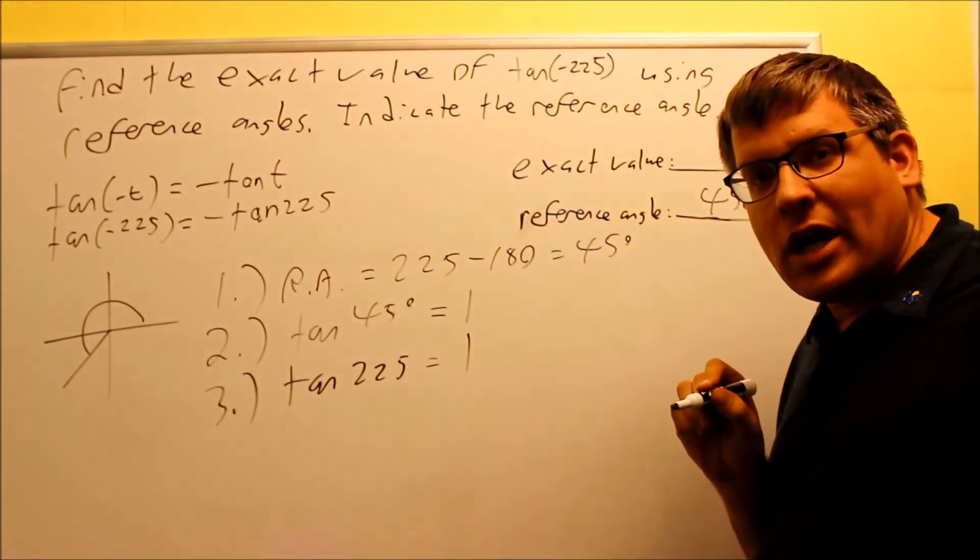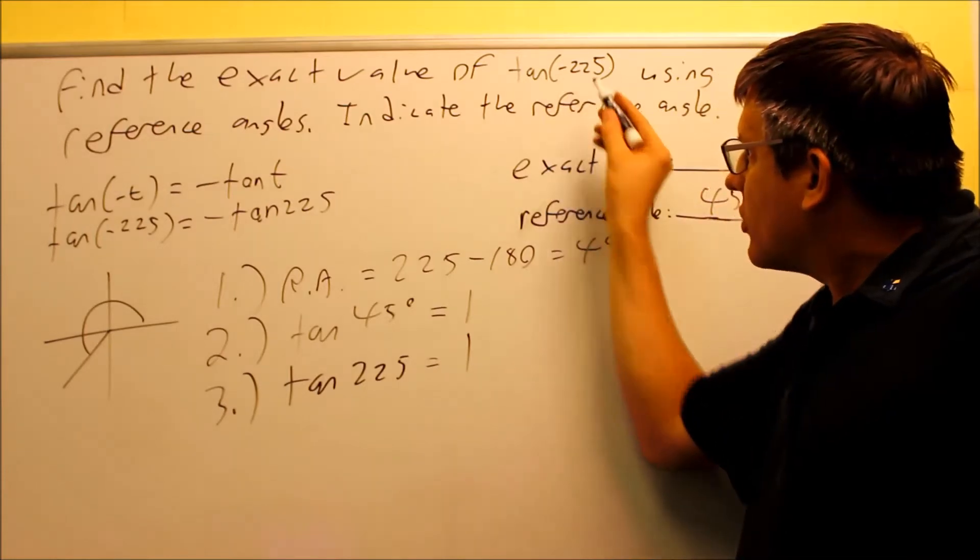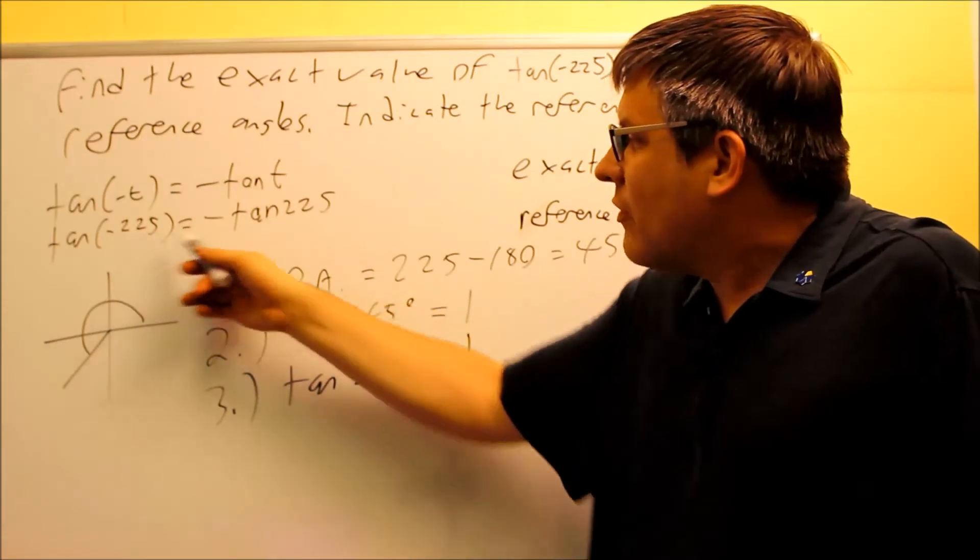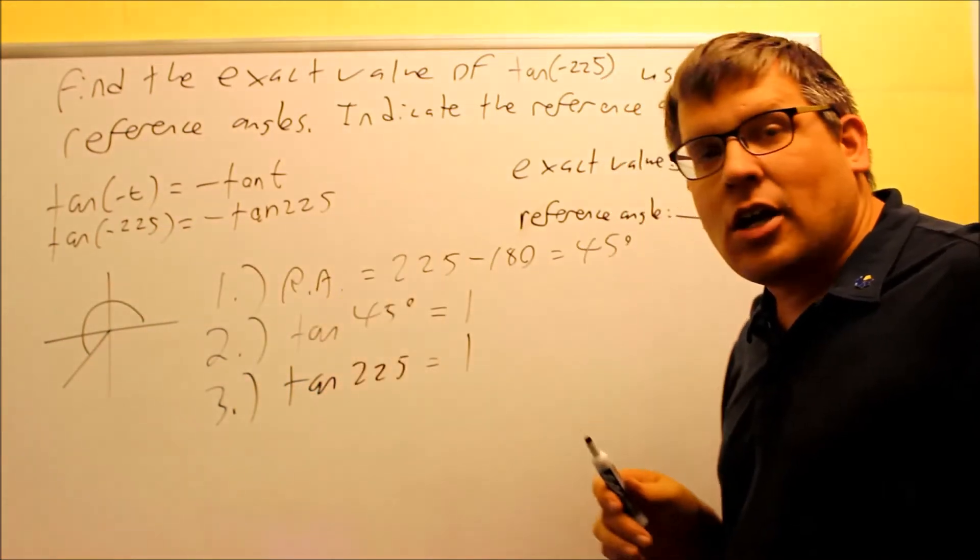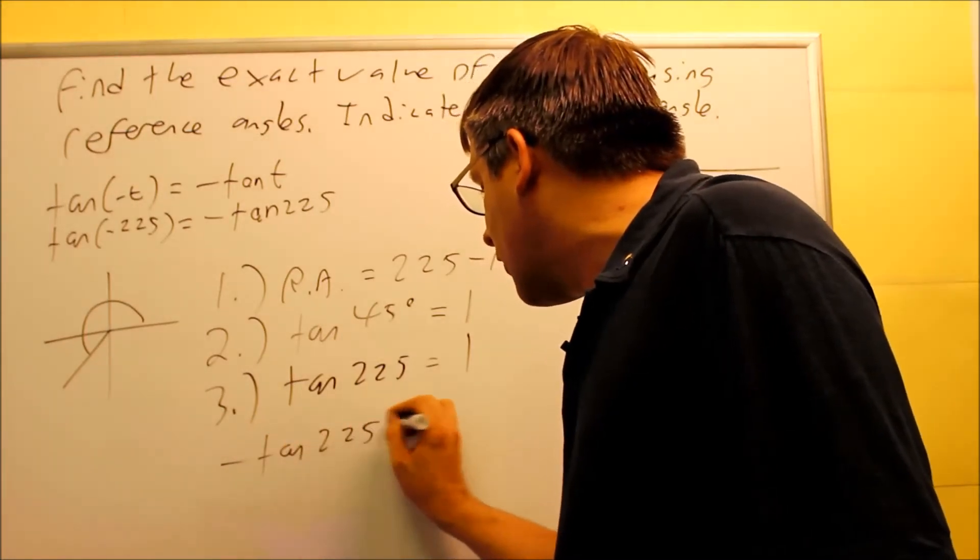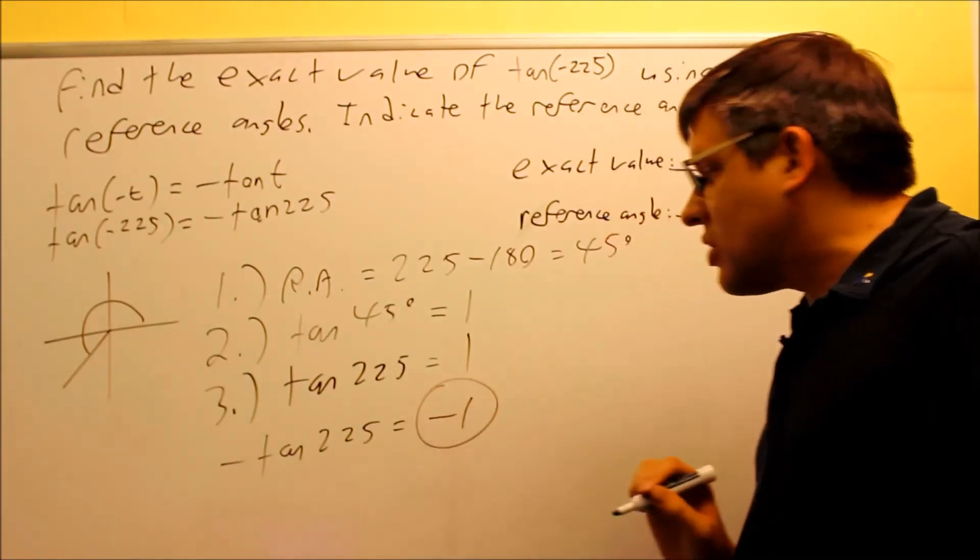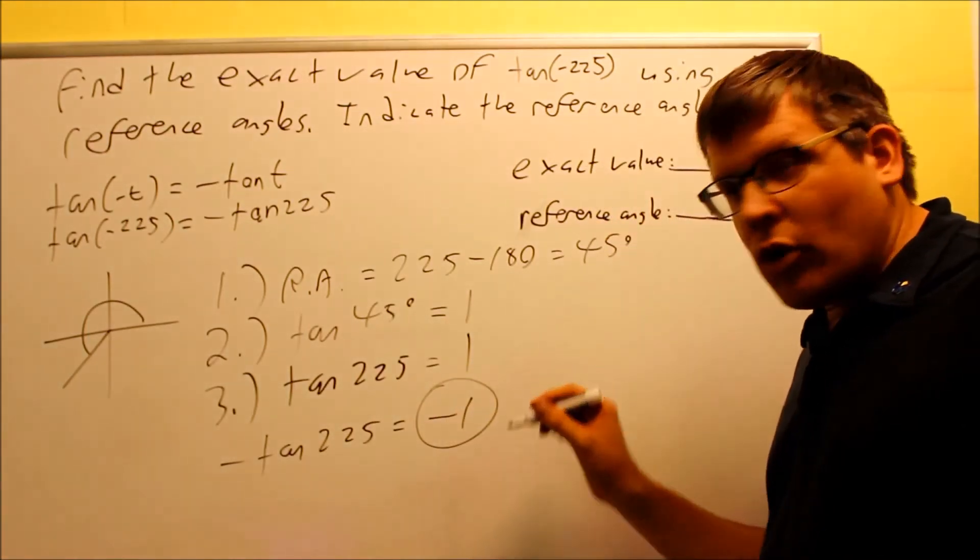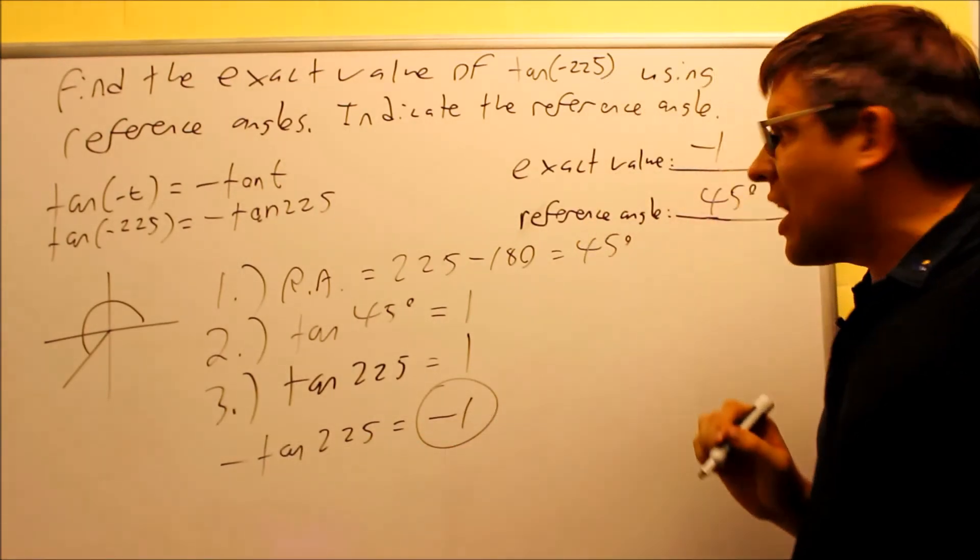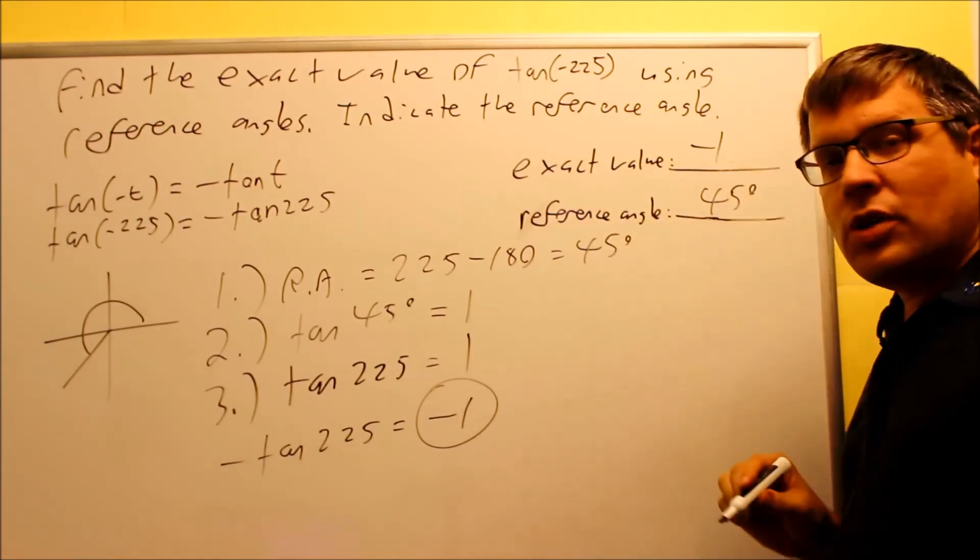The whole problem was originally tan(225), which equals 1. However, my problem was tan(-225). I've said that tan(-225) equals negative tan(225). So if I want to do negative tan(225), that means I need to apply a negative to this side. That actually means my answer is negative 1. So my exact value for tan(-225) is negative 1.